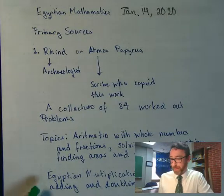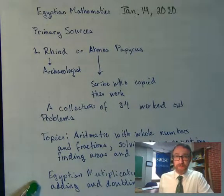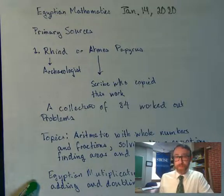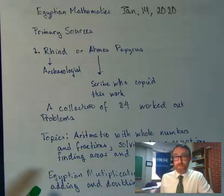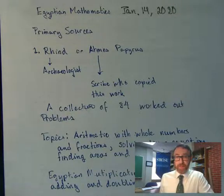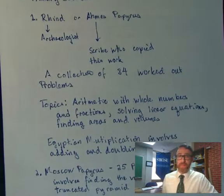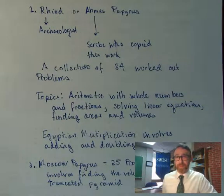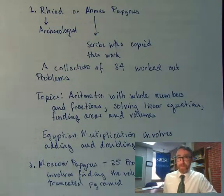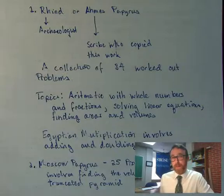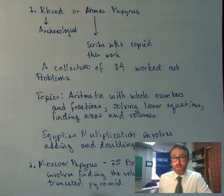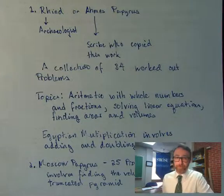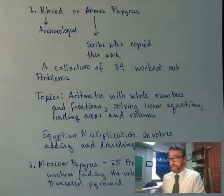As we'll see in just a few minutes, the process of Egyptian multiplication is a rather clever little procedure, and it involves adding and doubling. The other main source for our knowledge of Egyptian mathematics is the Moscow Papyrus. That's a collection of 25 problems, and one of those involves finding the volume of a truncated pyramid. So let's get into things with Egyptian multiplication.